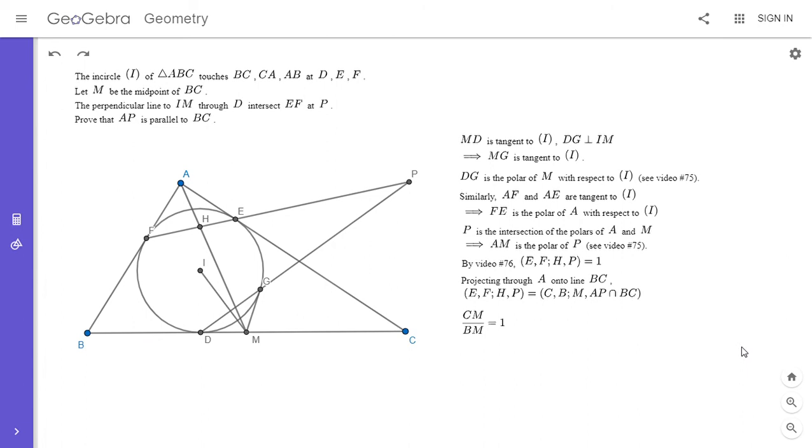So the only other option is if AP meets line BC at the point at infinity. This is the exact same strategy I used in my very last video. If a certain point divides a segment into a one to one ratio, and it's not the midpoint, it has to be the point at infinity. So AP intersect BC has to be the point at infinity, since this cross ratio as a whole is equal to one.